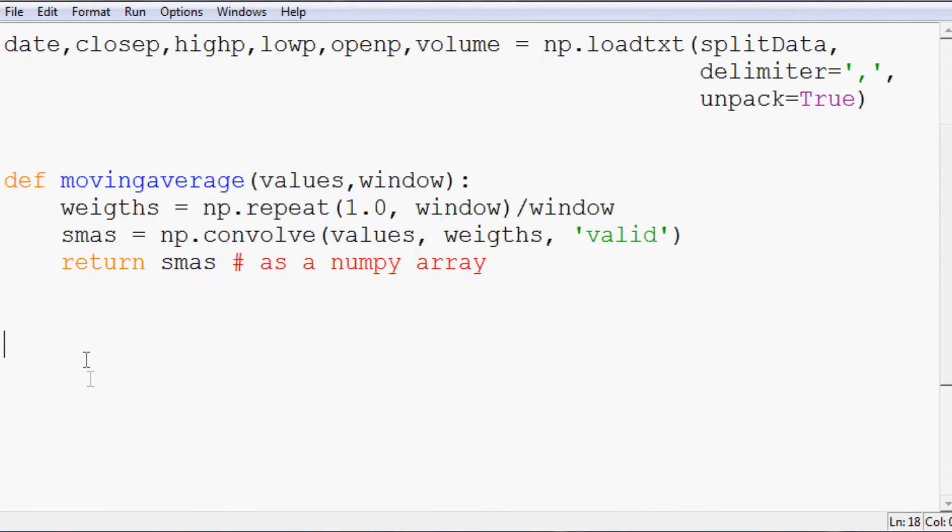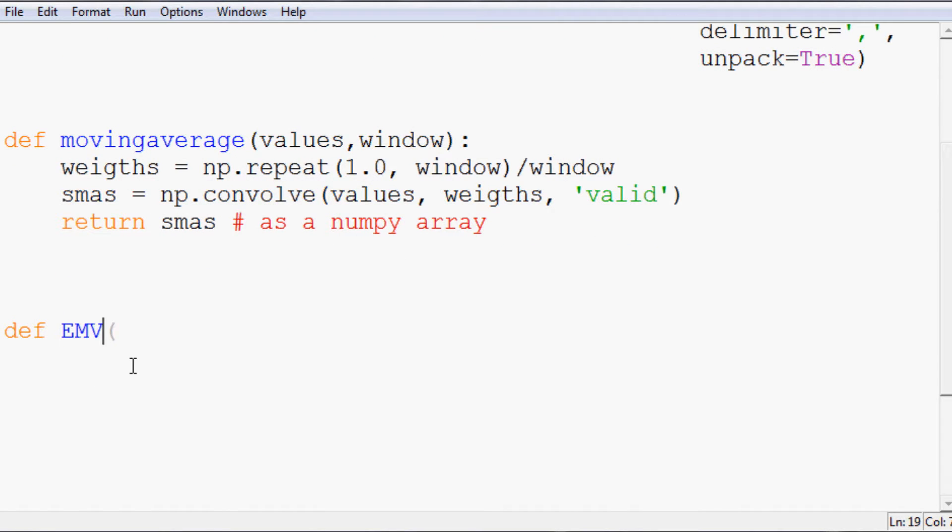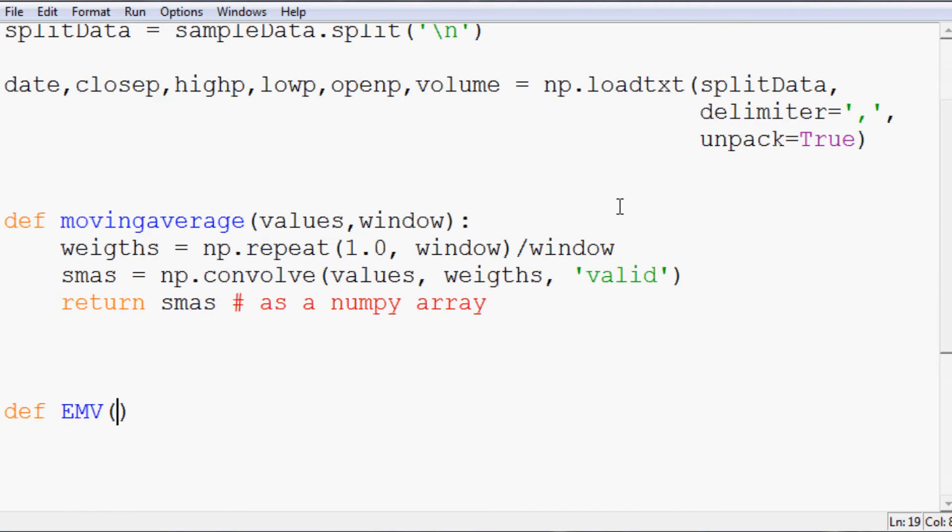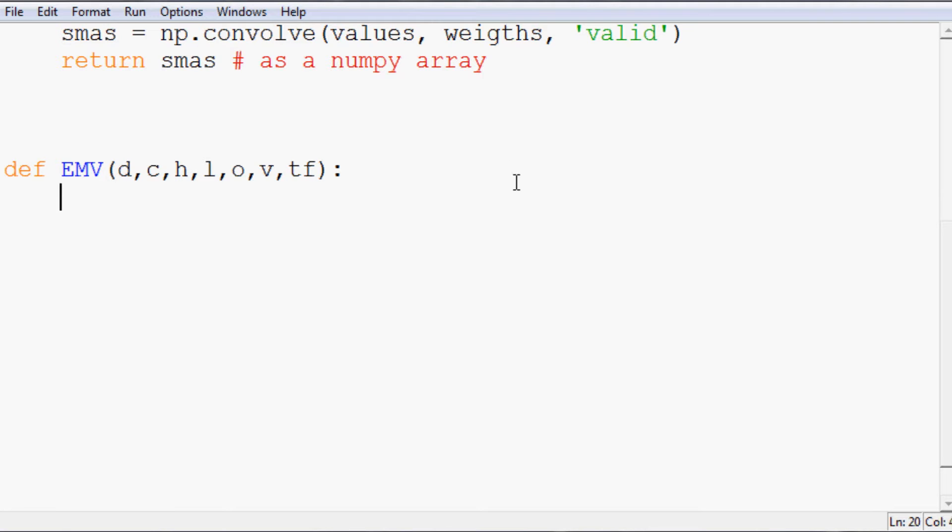Let's make some space down here, and now what we're going to go ahead and do is define emv. That's going to be our function, and we're going to allow it, and we're just going to make it so we can pass through all those variables at once. So, it's going to be d, c, h, l, o, v, and then time frame for the time frame of our emv. Next, if you've been following along, you should recognize this should be pretty familiar, x equals one. Also, we're going to have a variable called one p emv, and it's going to be an empty array for now, or empty list rather. Then, we're going to go ahead and say, while x is less than the length of any of these variables, really, we're just going to say close. And, we're going to do the following.